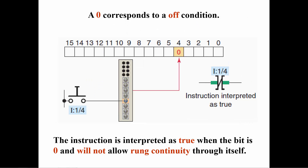If the external switch is not closed, a 0 is placed at the specified address in the input table, and the examine if open instruction becomes true and there is rung continuity through the contact. This is the same as a normally closed contact on a relay whose coil is not energized.